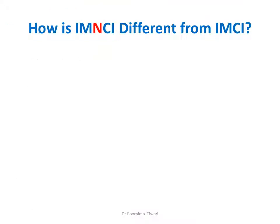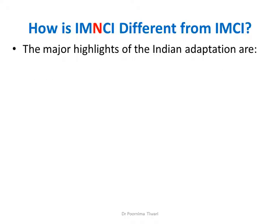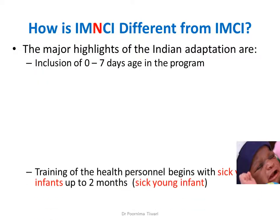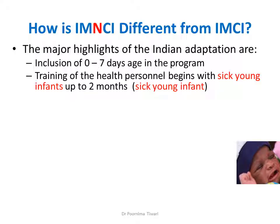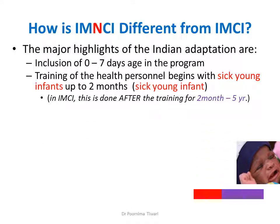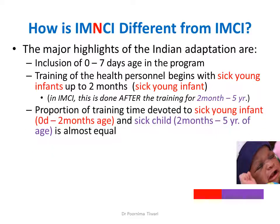How is IMNCI different from IMCI? In the Indian adaptation, first, assessment and management of 0 to 7 days of age is included in the training. Second, training of health personnel begins with the younger child first — that is, 0 to 2 months — whereas in IMCI this was done after training for older child management. The 0 to 2 months child is known as the sick young infant, and 2 months to 5 years is known as the sick child.